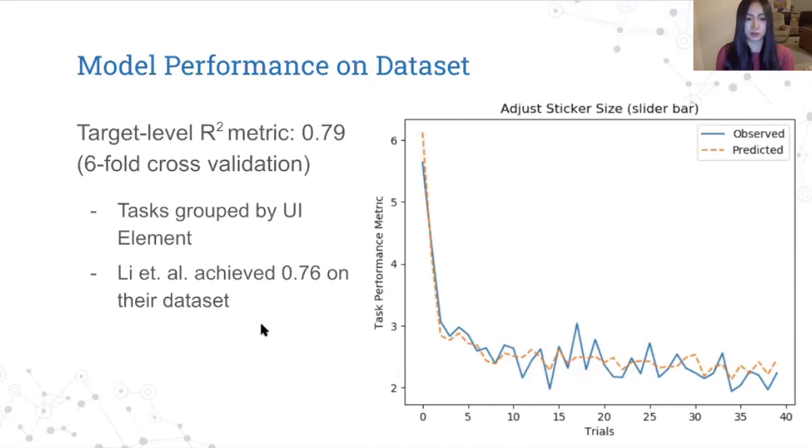We next trained and evaluated our model on the crowdsource data set. We use a target level R squared metric, which is also used by Li et al to evaluate their model. And it's defined as the R squared of the sequence of relevant tasks for each UI element, like for instance, all the times the user interact with the slider bar, and that's averaged across all the elements. So we achieved a target level R squared of 0.79 on our data set from six-fold cross-validation. And on the right, we plotted the predicted and actual task performance values for the slider bar interactions.